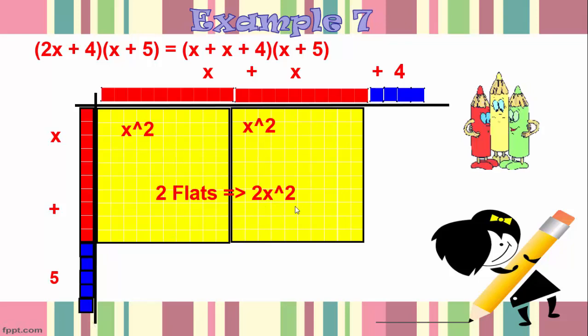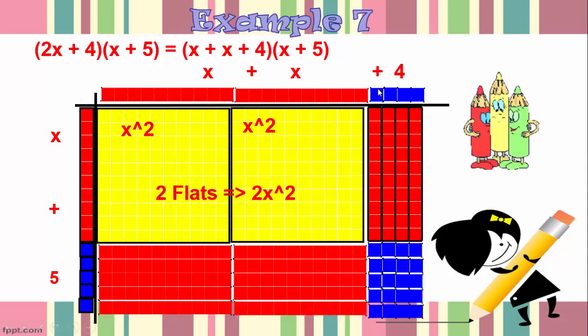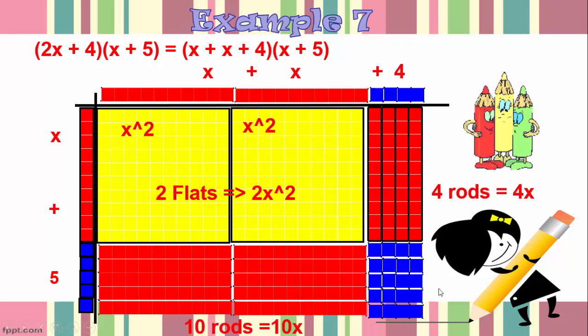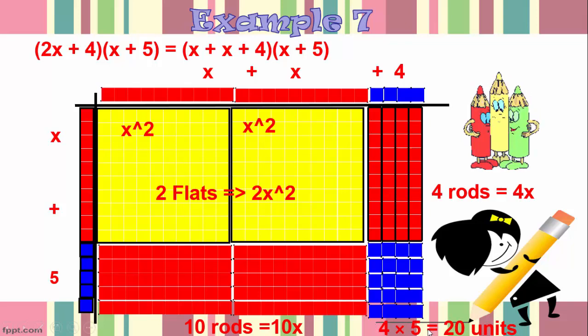I then fill in the rods so here from the 4 I can construct 4 rods, from the 5 here I can construct 10 rods and then I fill in everything else with the units. So I have 4 red rods here, I have 10 red rods here and I have 4 times 5 or 20 units here.